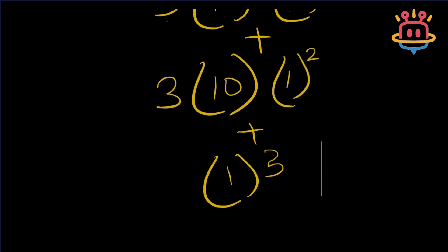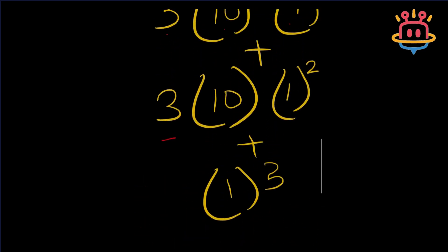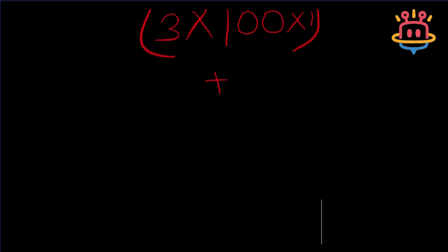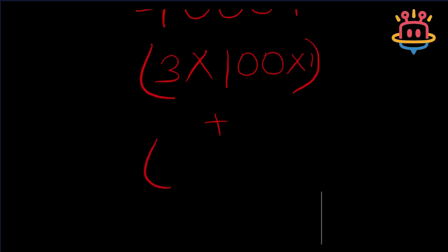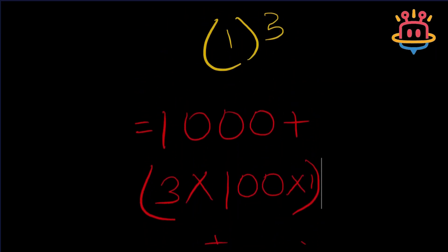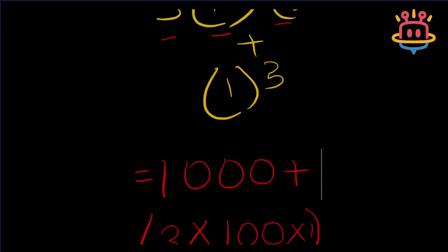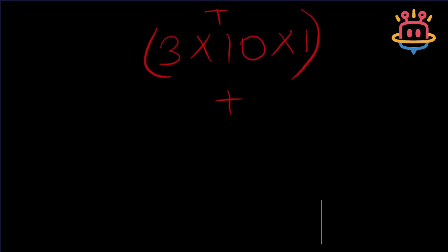Next we had 3 multiplied by 10 multiplied by square of 1. So we can write it 3 multiplied by 10, and square of 1 is 1. And for the final expression we have cube of 1, which is 1 itself.